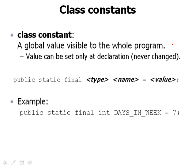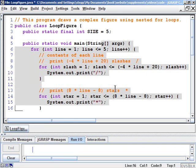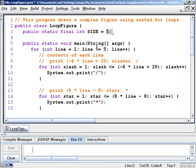To achieve that, we use a class constant. A class constant is like a variable but with two key differences: its value is global, accessible anywhere in the program, and it can only be set once at declaration. The syntax is: public static final, followed by the type, name, and value. We declare a public static final integer named SIZE set to 5, above the main method.